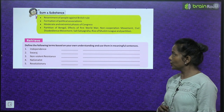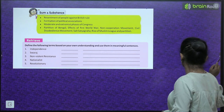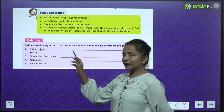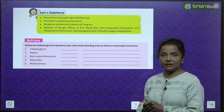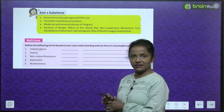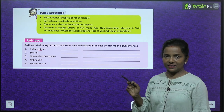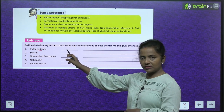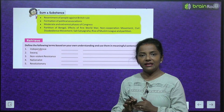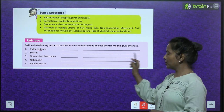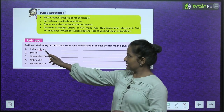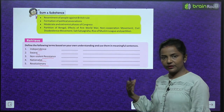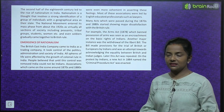First, define the following terms based on your own understanding and use them in meaningful sentences. Some words are given here — you have to write down the meaning of each and form a meaningful sentence. The terms are: Independence, Swaraj, Non-Violence, Resistance, Nationalist, and Revolutionary. First read the chapter and then you will come to know about these terms.